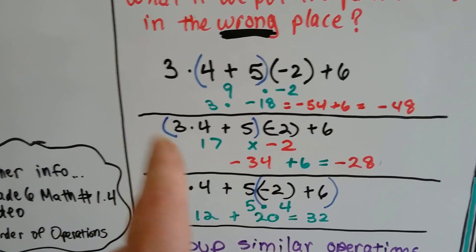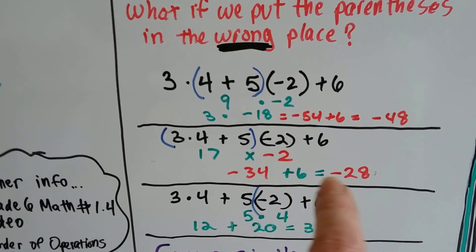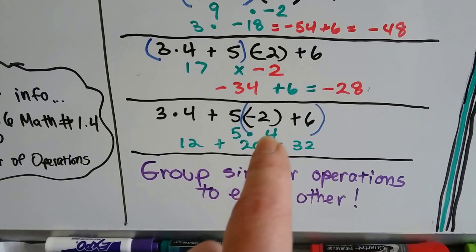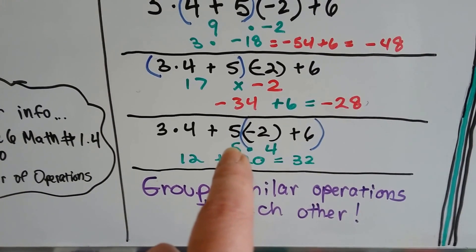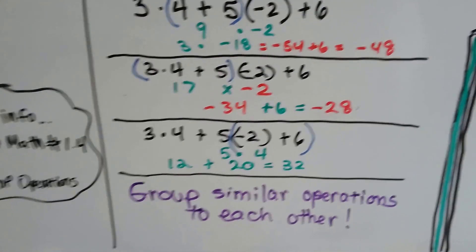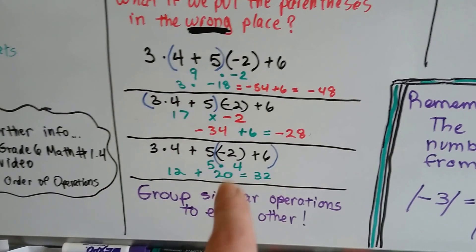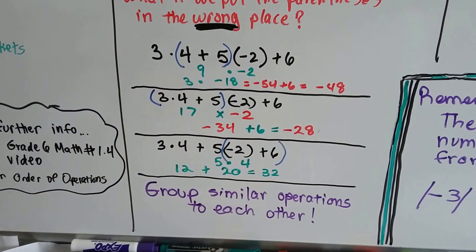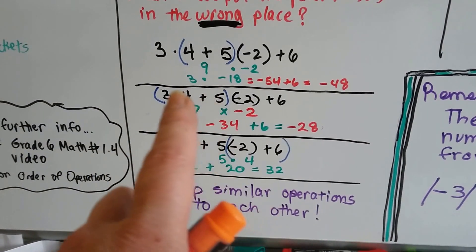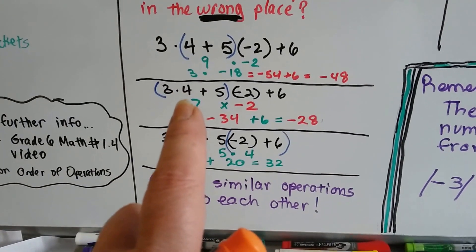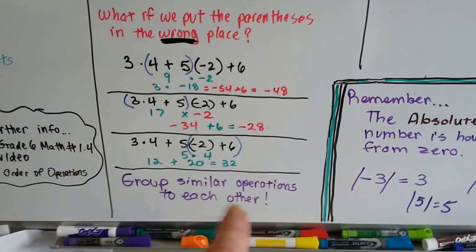What if we grouped these differently? 3 times 4 is 12 plus 5 is 17, and multiplying by negative 2 gives negative 34; adding 6 gives negative 28. Or grouping negative 2 plus 6 gives positive 4, times 5 is 20, plus 12 is positive 32. None of these are right. You want to group similar operations together — group the multiplications together, not a multiplication with an addition. If the parentheses are already there from the book, that's fine, but don't add parentheses that mix different operations.